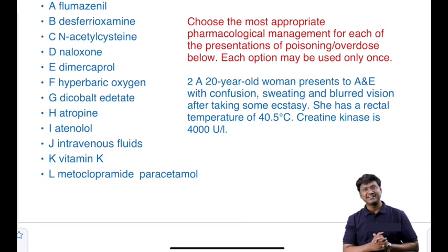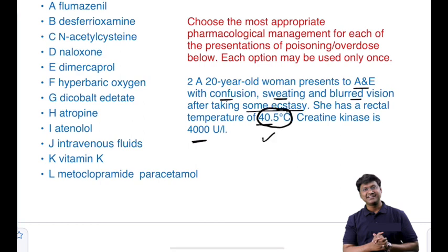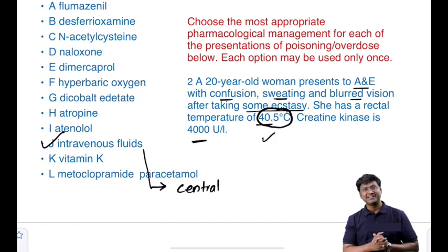A 20-year-old woman is brought to accident and emergency with confusion, sweating, and blurred vision after taking ecstasy. Her rectal temperature is 40.5°C and creatinine kinase is 4000 units/L. Because the patient is hyperthermic, the first-line treatment is to immediately shift the patient to ICU for active cooling, along with IV fluid replacement given via central line.